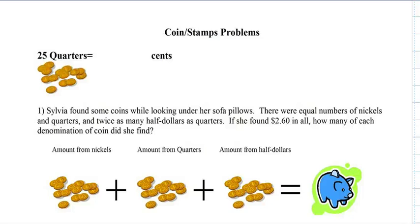These are coin stamp problems. The first thing we want to look at is what happens with money. If you have 25 quarters and you want to find out how many cents there are, how many pennies there actually are, you take the number of coins you have and multiply it by the value of a quarter. One quarter is 25 cents, so 25 times 25 is 625, 625 cents. That's the main idea. It's the value times the number of coins.